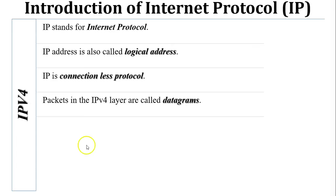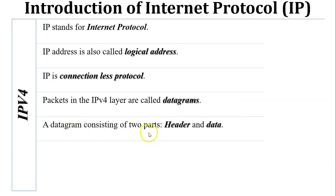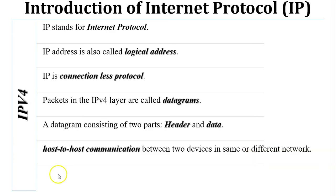The packet in the IPv4 layer — that is, the packet in the network layer — is called a datagram. A datagram consists of two parts: one is the header and the second one is the data. In this video I am going to discuss about the header of the IPv4.